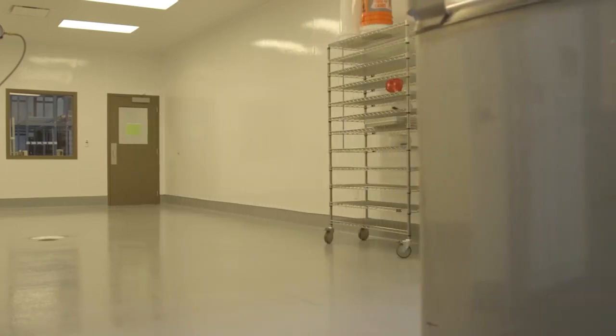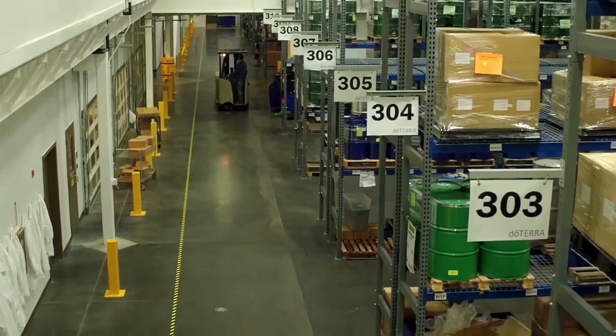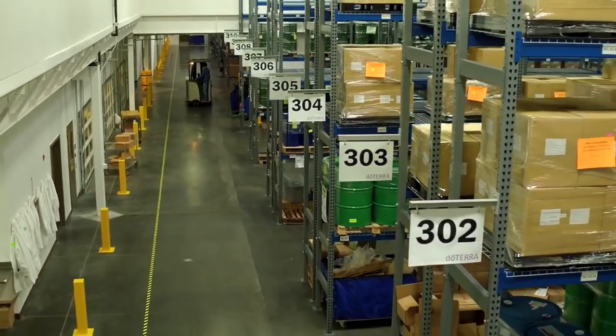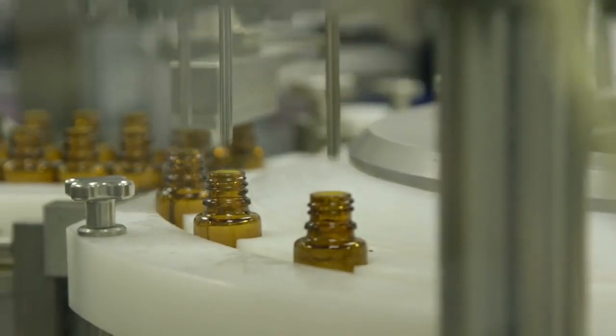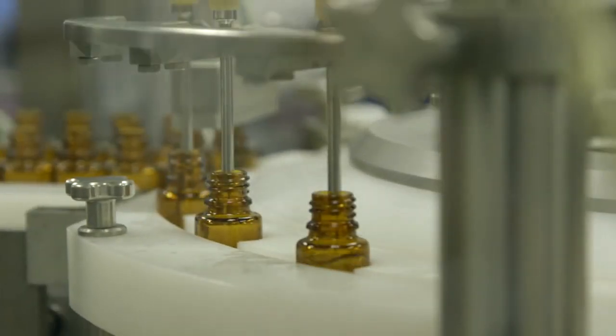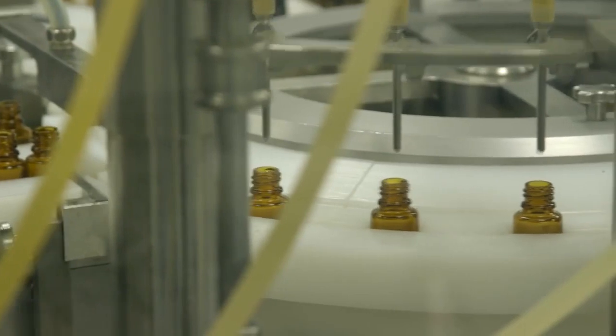Then the oil may sit in our warehouse for a couple weeks before we fill it in our production line, so it will stay in its sealed container. We will pull samples at the beginning, middle, and end of that production run. We will take those samples and do even more testing than we did prior, so then those test results come back before that oil can even leave this building.